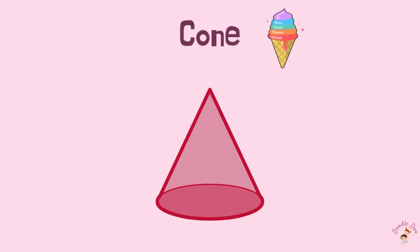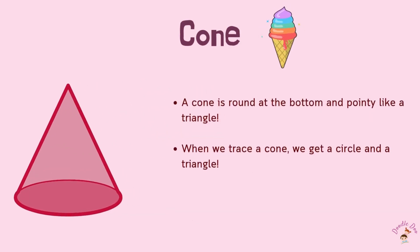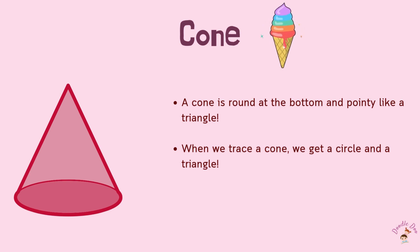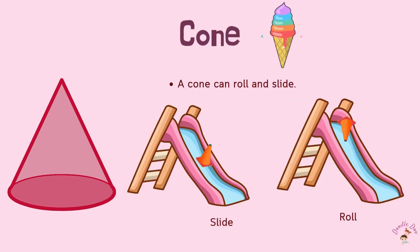Now move on to Cone. Cone is round at the bottom and pointing like a triangle. When you trace a cone, we get a circle and a triangle. A cone can roll and slide.